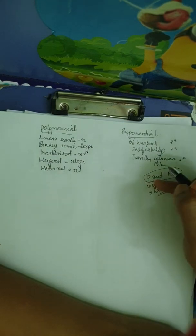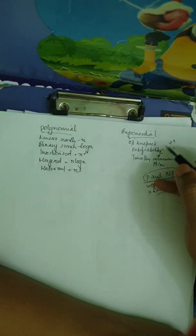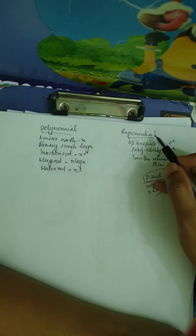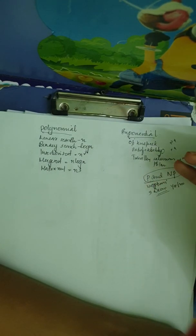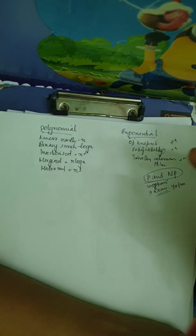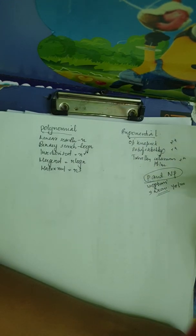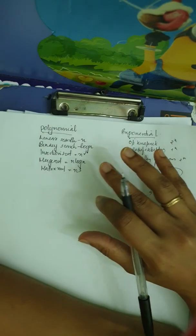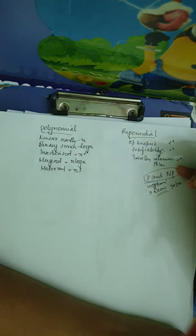Our aim is that we need to convert these exponential time complexity problems into polynomial problems. This is still an active research area. This is essentially what P and NP problems are about.